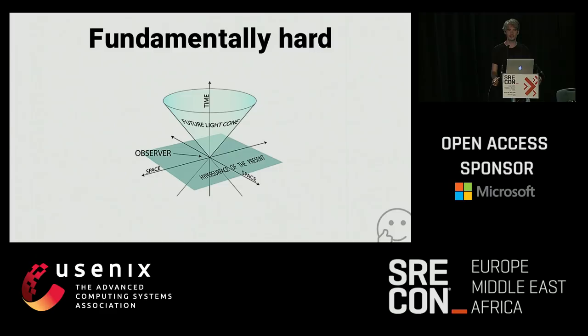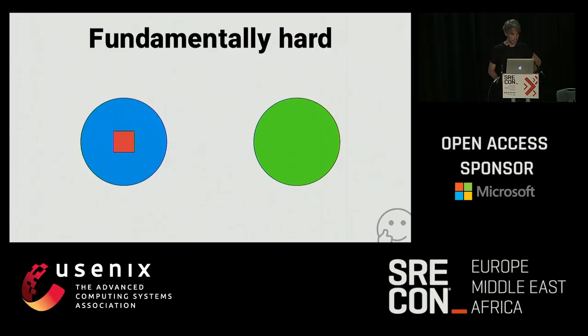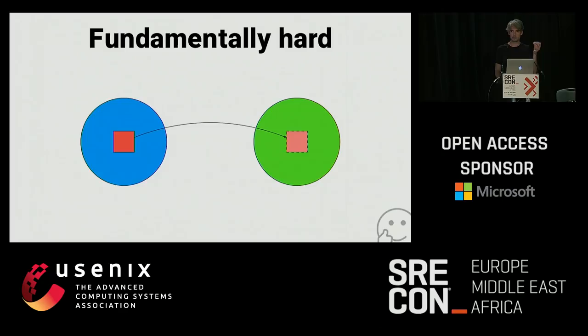I want to argue that this is fundamentally hard — not just because we build bad software, but because the transmission of information through time and space is a fundamentally hard problem. When we want to communicate information over some distance — moving a little red square from one node to another — we necessarily need to traverse the time dimension too. That's what the light cone is about. The speed of light imposes a maximum rate of information transmission.